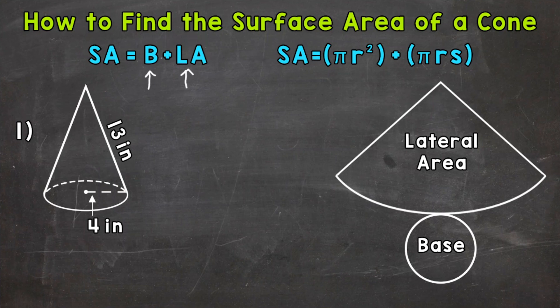Now we can make that even more specific. We'll use pi r squared for the area of the circular base, plus pi rs. Pi rs is going to give us the lateral area. Now the r stands for radius within that formula, and then the s stands for the slant height.